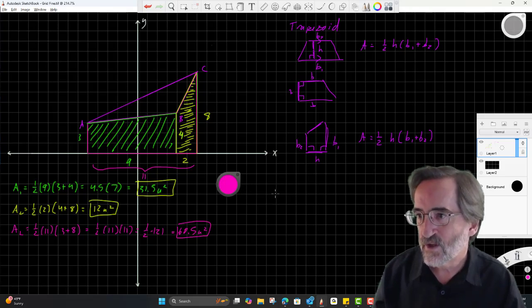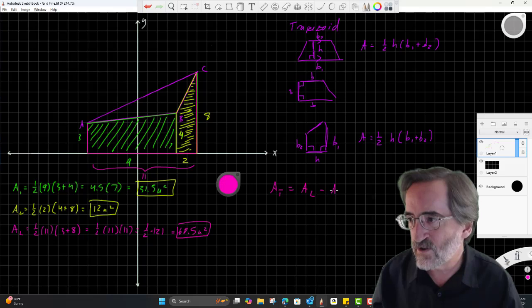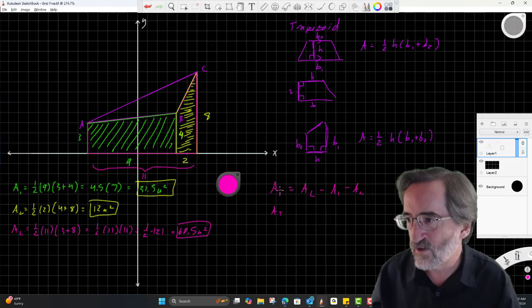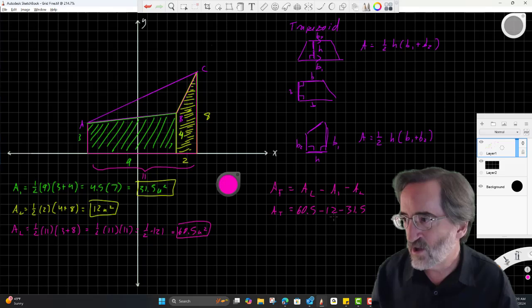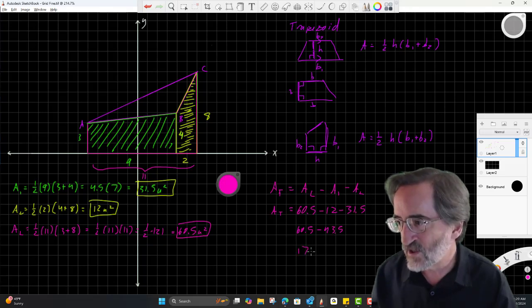So the area of the triangle is the area of the big trapezoid, the large, minus all of the small areas. So the area of the triangle is the large area, 60.5, minus 12, minus 31.5. That's 43.5, so 60.5 minus 43.5. That's 10.5 plus 6.5, 17. 17 square units.